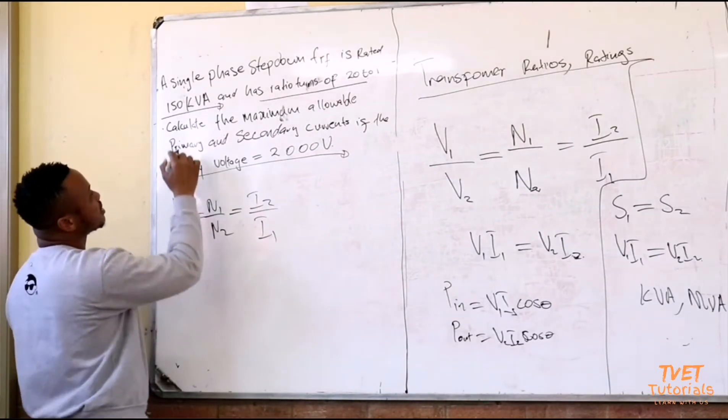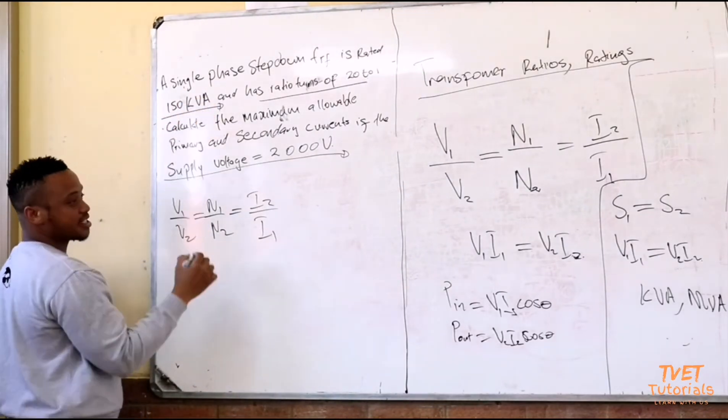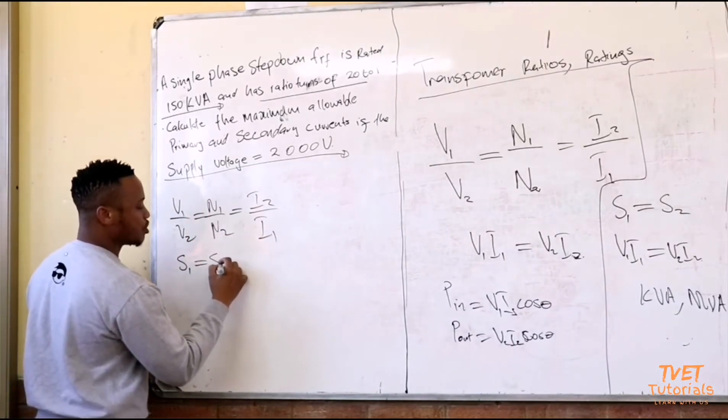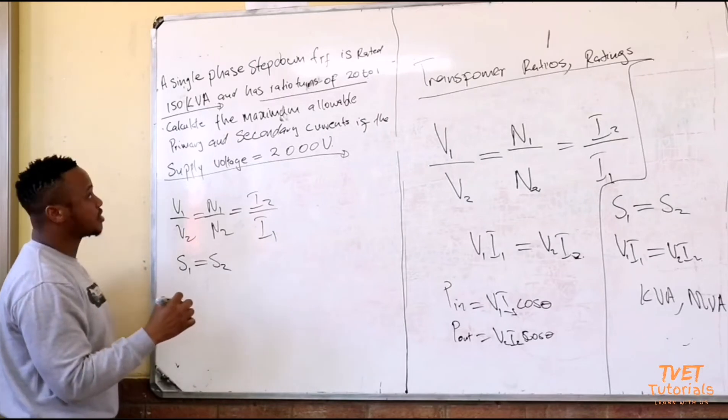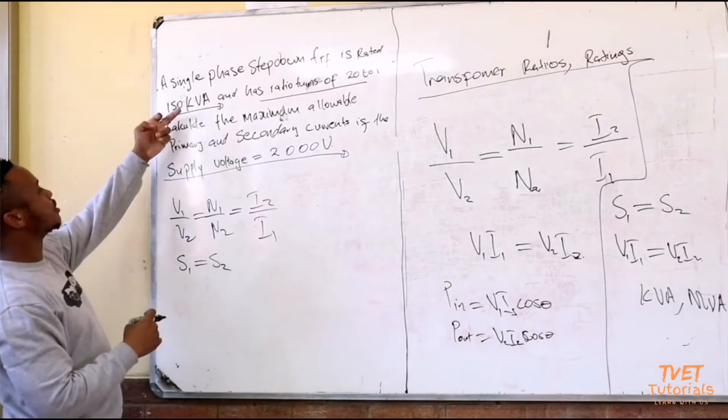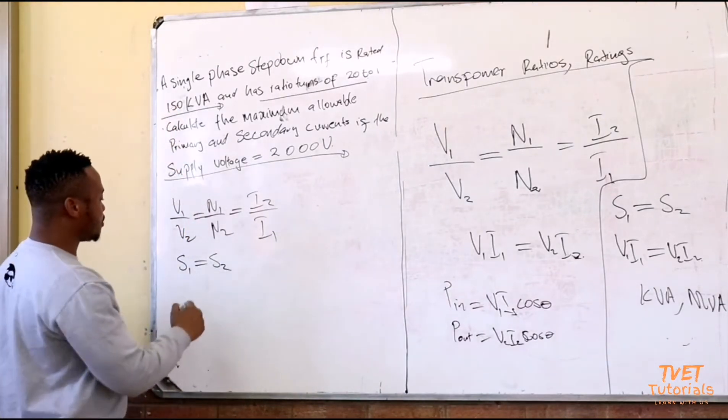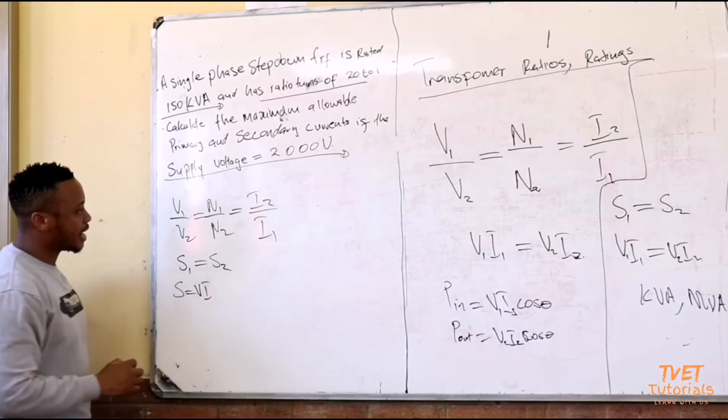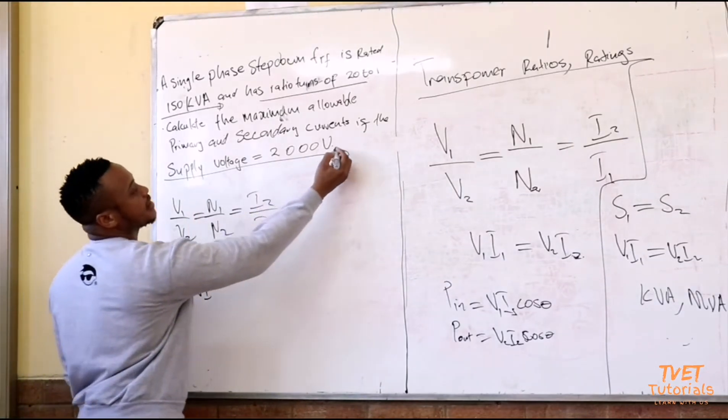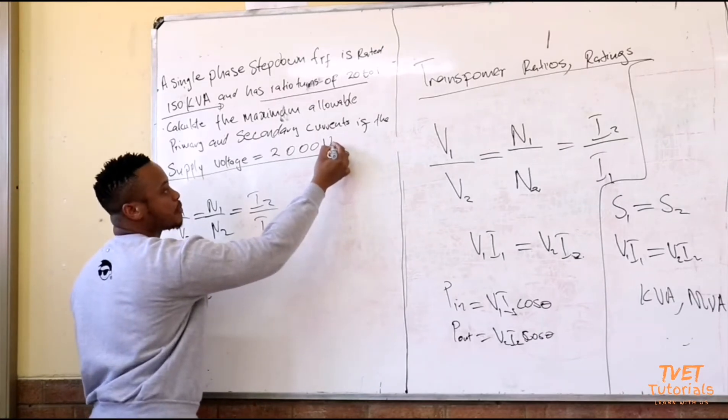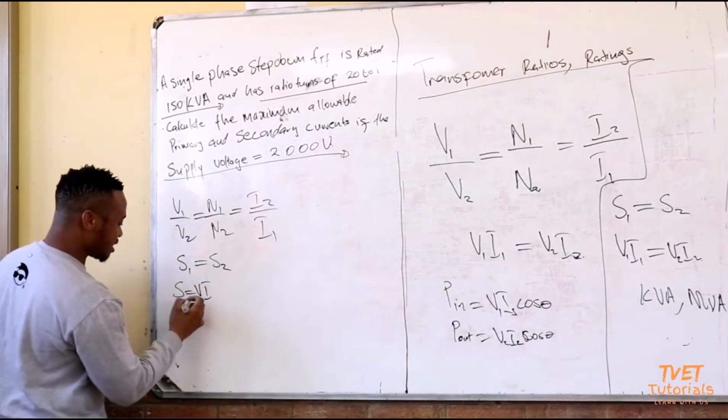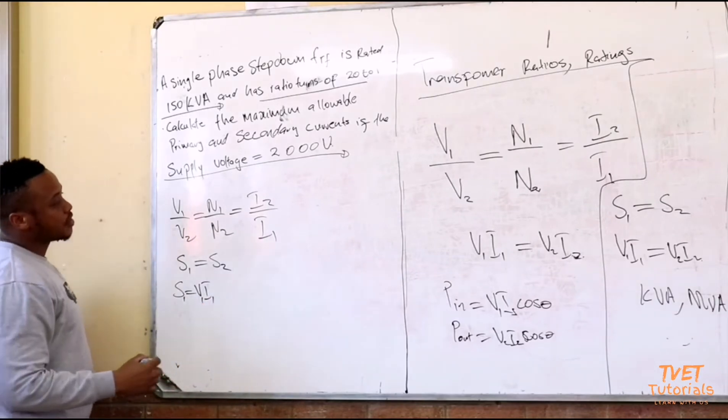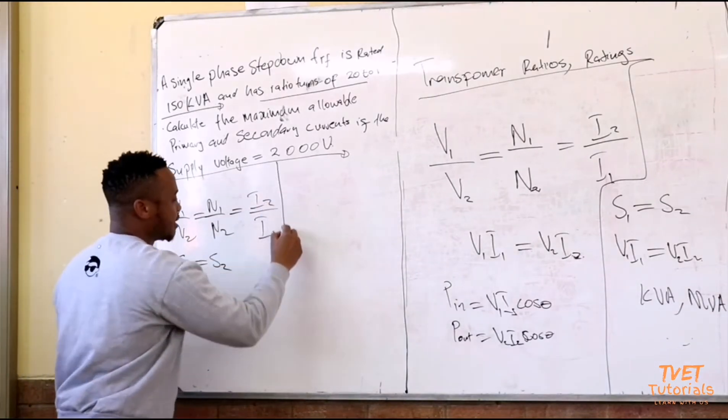And also I will use the fact that S on the primary will be equal to S on the secondary side. Because I know that S is equal to V multiplied by I, I will use the primary side so I can use S1 and V1 and I1.